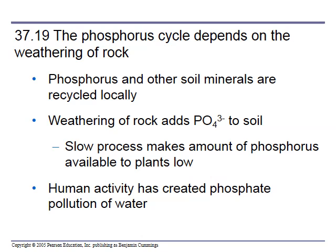The phosphorus cycle depends on the weathering of rock. Phosphorus is essential — think phosphate as in ATP. Phosphorus and other soil minerals are recycled locally; the weathering of rock adds phosphate to the soil slowly, so phosphorus is almost always considered a limiting factor — you can only get so much growth because you only have so much phosphorus. If you add phosphate to the soil, you can increase growth. Human activities have created phosphate pollution of water, causing huge algae blooms — that is actually considered a form of pollution.